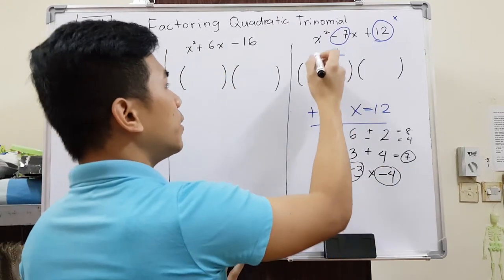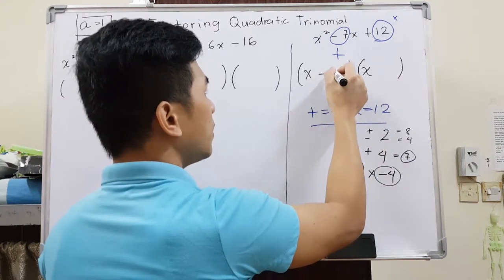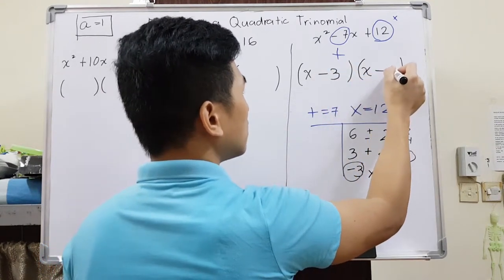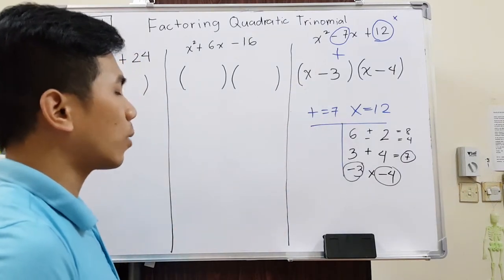All we have to do here is put an x, put an x, and then write the numbers: x minus 3 and then x minus 4. And there you go, we already factored x squared minus 7x plus 12.